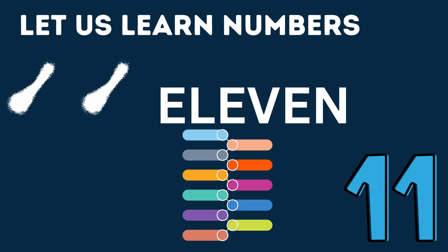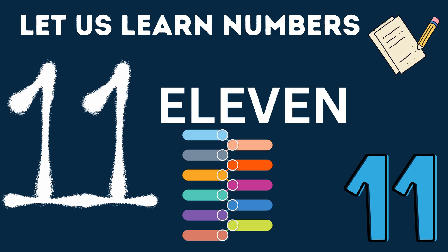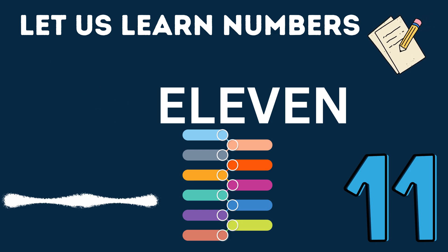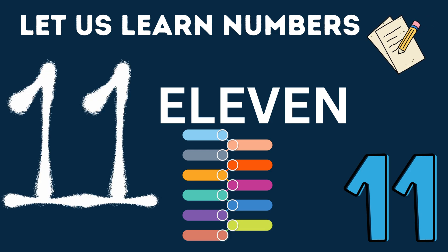All right. 11 — E, L, E, V, E, N — 11. How many colors do you see? 11 different colors.